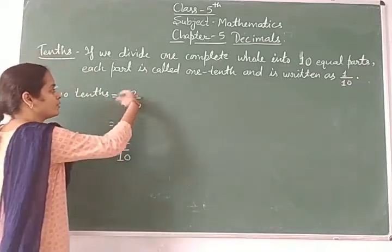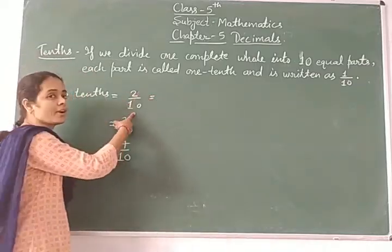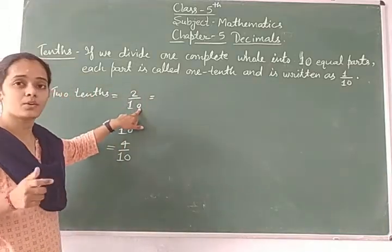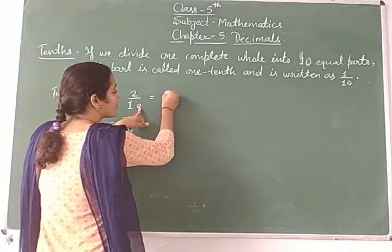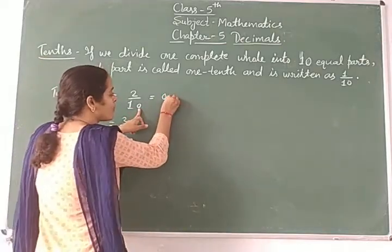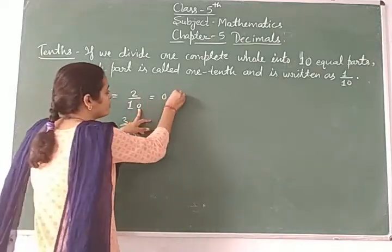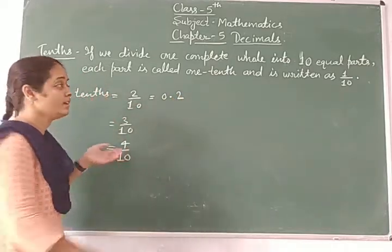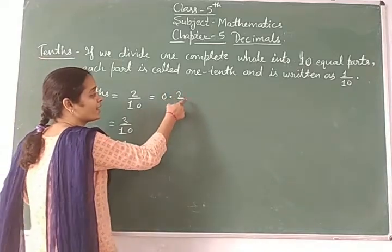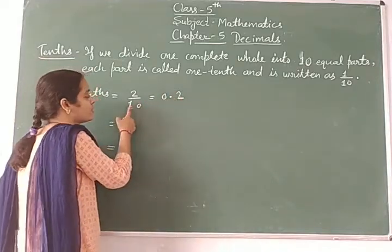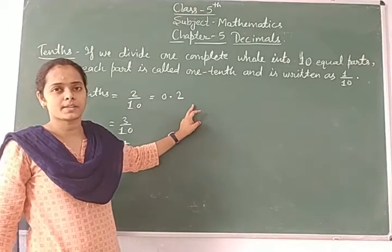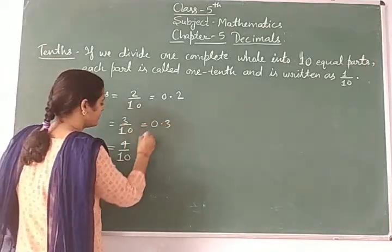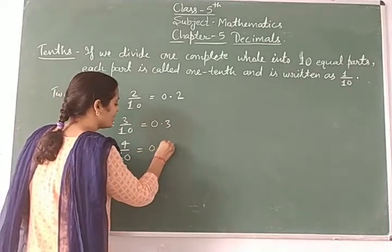Now, to convert into decimal, no need to divide in your copy — direct with division. For two upon ten: write zero, then a point, then two — that gives 0.2. Similarly, three-tenths gives 0.3, and four-tenths gives 0.4. One zero means you place the point, then write the numerator to the right of the point.